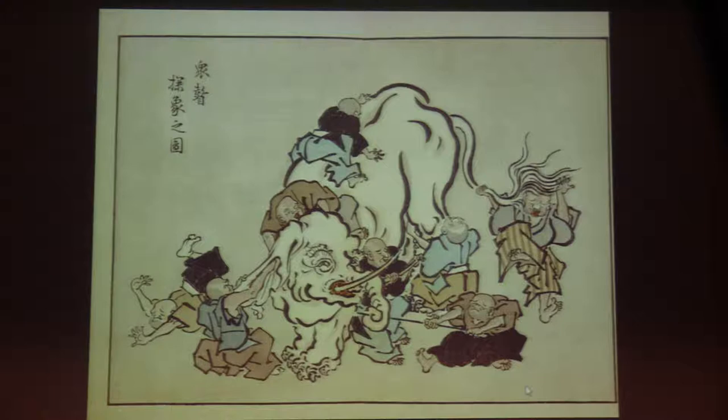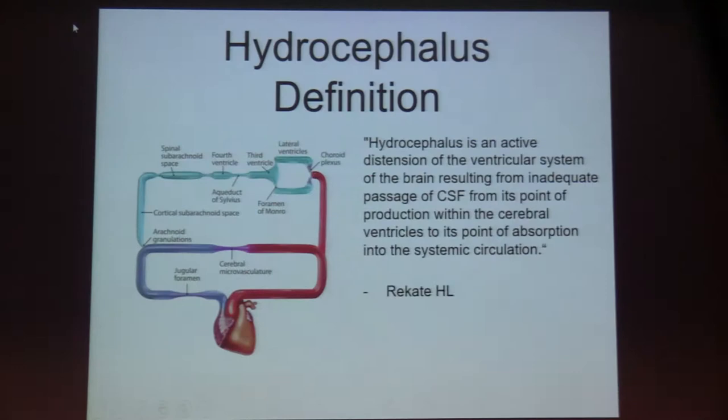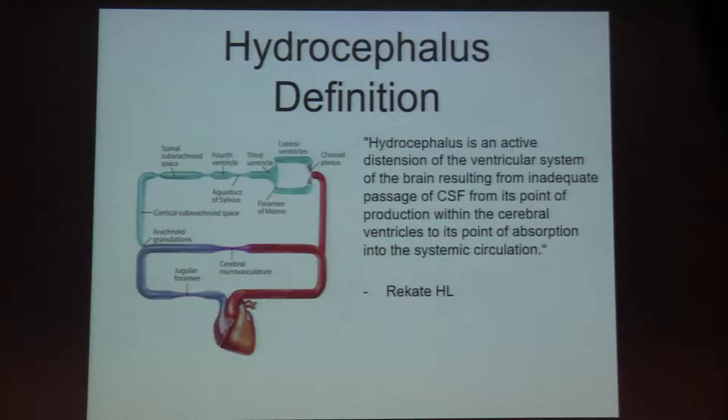Like the woodblock print showing monks feeling an elephant and each coming to a different conclusion, we have to have a common language across continents and across centers — this is some attempt to do that. One of the issues for us is that many patients have dilated ventricles in older age, and distinguishing those with dilated ventricles due to hydrocephalus from those with atrophy or other causes is one of the challenges.